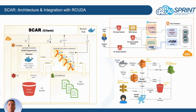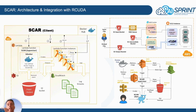SCARP is also integrated with AWS Batch so that a Lambda function, when an inference request is directed to a SCARP function, can automatically delegate the execution into an AWS Batch job which runs on dynamically provisioned virtual machines.